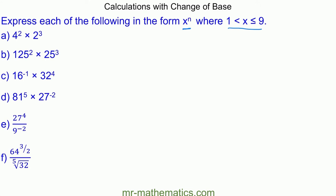We'll begin with question a, where we have 4 squared times 2 to the power of 3. To combine into a single power, we need the bases of 4 and 2 to be the same. We're going to write them both with base 2, because we can write 2 squared to make the 4.